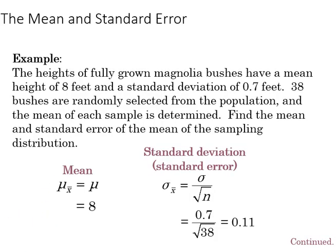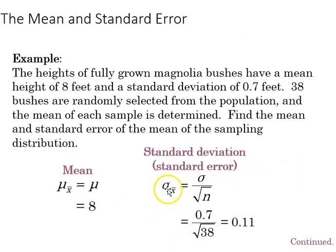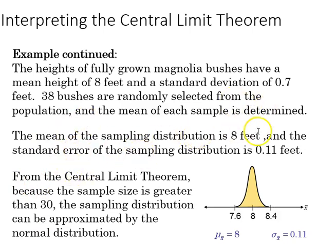Here's an example of finding the mean and standard error of the population. The heights of fully grown magnolia bushes have a mean height of 8 feet and a standard deviation of 0.7. If a sample of 38 bushes is randomly selected, the sampling mean equals the population mean of 8 feet. We find the standard error by taking the standard deviation divided by the square root of n: 0.7 divided by the square root of 38, which gives us 0.11. Since the sampling size is greater than 30, the sampling distribution can be approximated by the normal distribution.